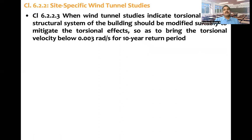When wind tunnel studies indicate torsional motion, the structural system of the building should be modified suitably to mitigate the torsional effect, so as to bring the torsional velocity below 0.003 radians per second for 10 year return period. Either slightly change the orientation or change the structural system, and bring this torsional velocity below 0.003 radians per second. That is the remedy which code is suggesting.